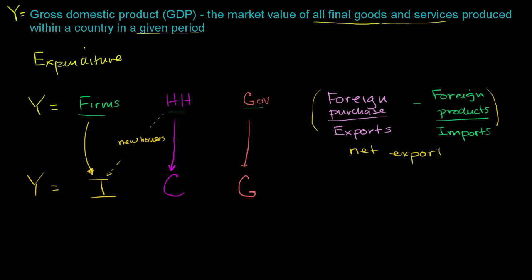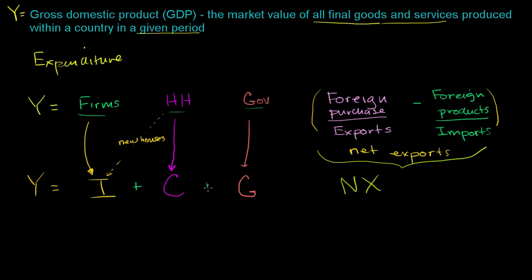Net exports: if this number is positive, net exports are positive, meaning we're exporting more than we're importing. If this number is negative, net exports is negative, meaning we're importing more than we are exporting. But in the traditional expenditure view of GDP, this whole part is referred to as net exports. So you sum up these things — which are closely related to the intuitive versions we started with — and you've essentially broken down the expenditure view of GDP in the traditional sense. In the next few videos, I'll think through a bunch of different examples and which bucket they fall into.